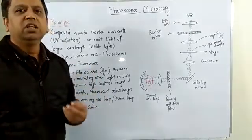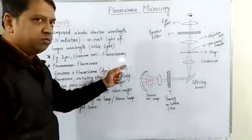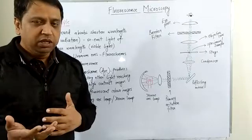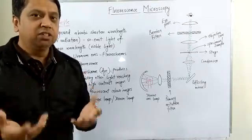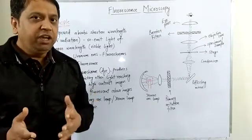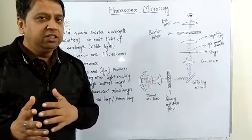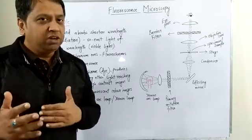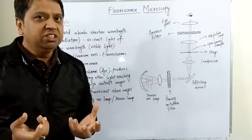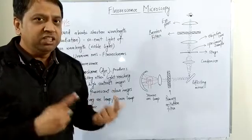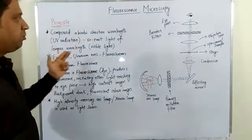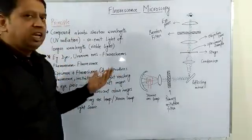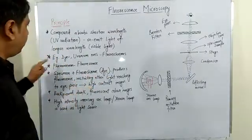The compounds which cause fluorescence are known as fluorochromes. The idea is: if we put a fluorescent sample along with any dye or fluorochrome, it will start emitting fluorescent light. If we stop the light not coming from the specimen, we get a dark background with the specimen illuminated by fluorescent light. The compounds absorb short wavelength UV radiation and re-emit longer wavelength visible light.